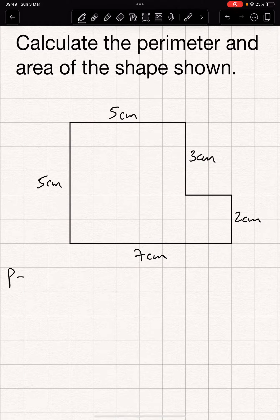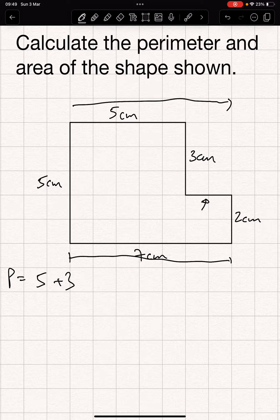So starting there again, perimeter equals 5 plus 3. Now this bit here, that's going to be 2, because you see it's 7 between here and here, so it's 7 across here, and 5 from the 7 leaves 2 here.